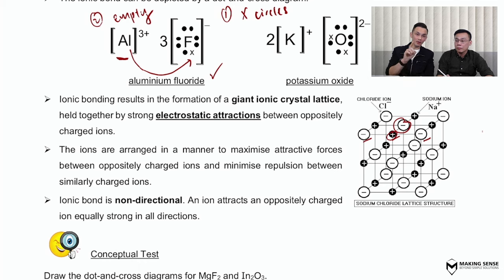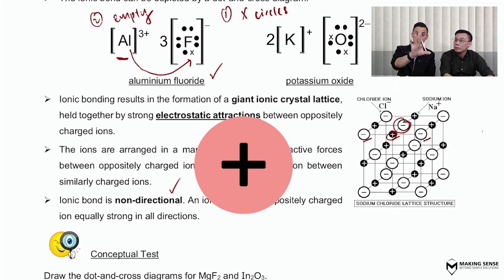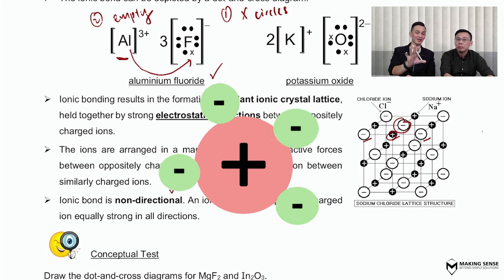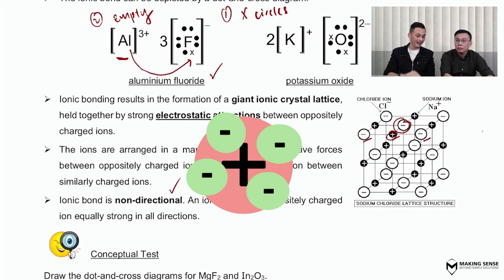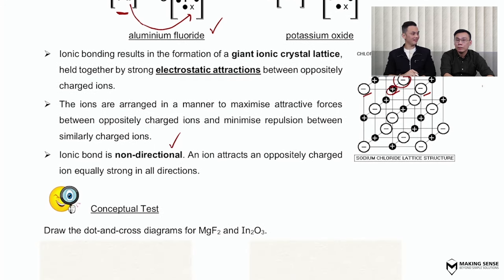Another thing to notice is the phrase in your notes that says ionic bonds are non-directional. Non-directional means that if you have a cation, it doesn't matter where the anion is — it can be above, below, left, or right — the cation will attract the anion equally strongly in all directions. That is what we mean by non-directional.